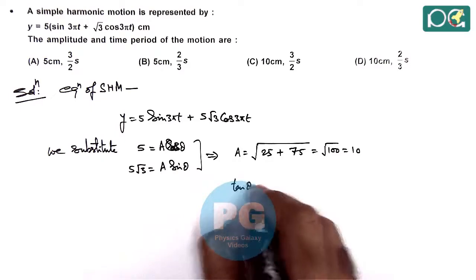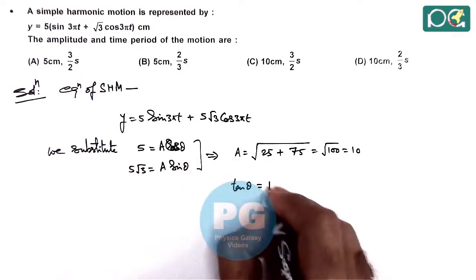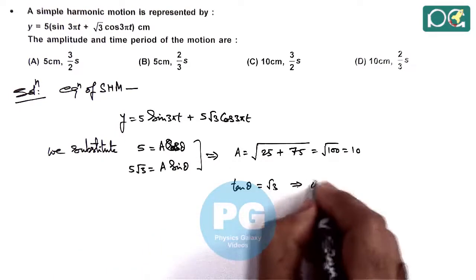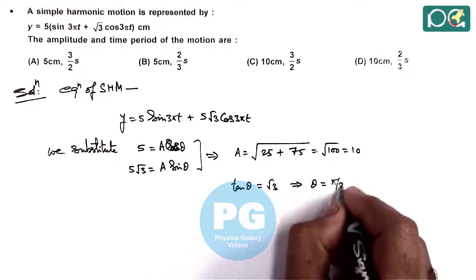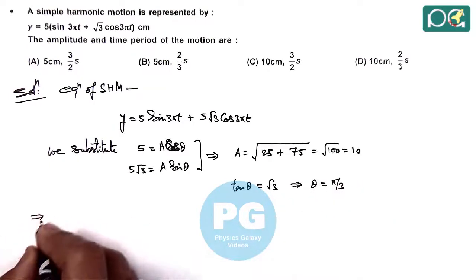And here if we divide the two, then tan theta we are getting is √3, or the value of theta we are getting is π/3.